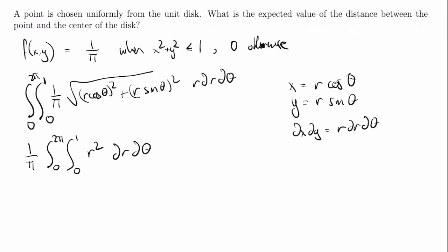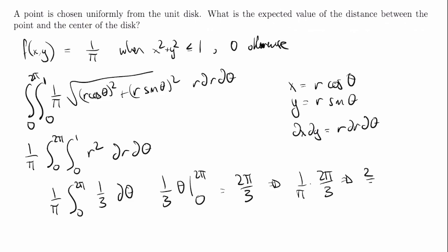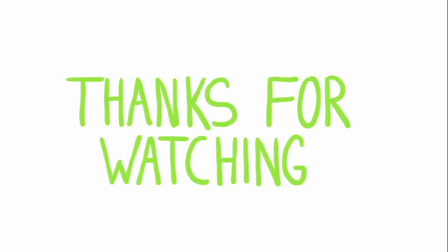Multiplying by 1/π out front: (1/π) × (2π/3) = 2/3, since the π's cancel out. So to sum up, the expected value of the distance between the point and the center of the disk is just 2/3. Alright, thank you for watching — I hope you enjoyed that problem, and if you enjoy this type of content, please consider subscribing. I'll see you next time!